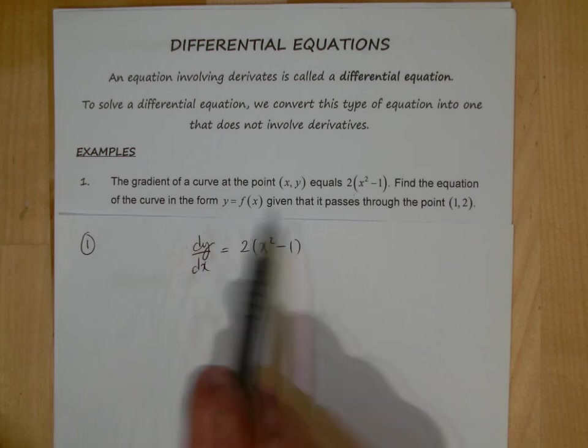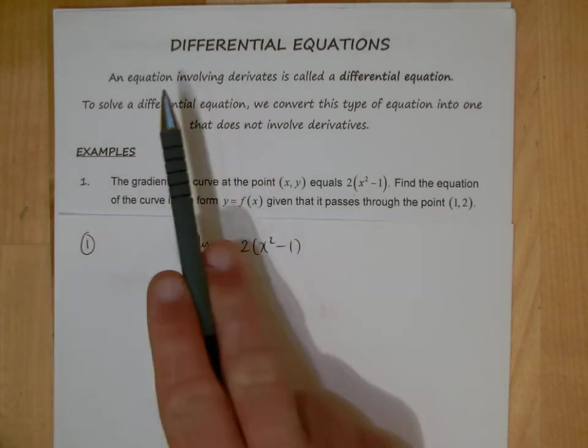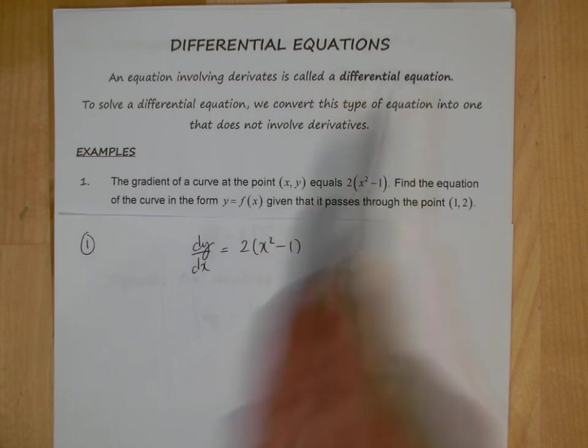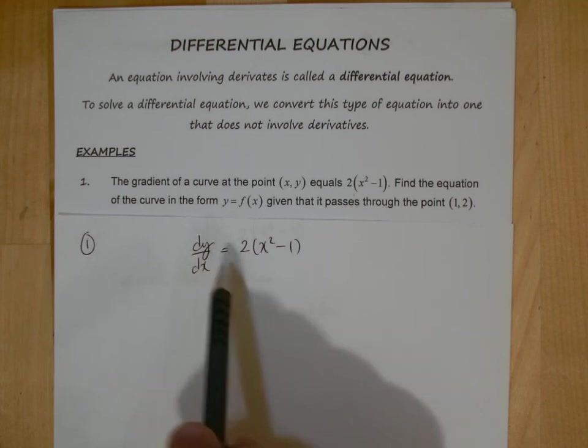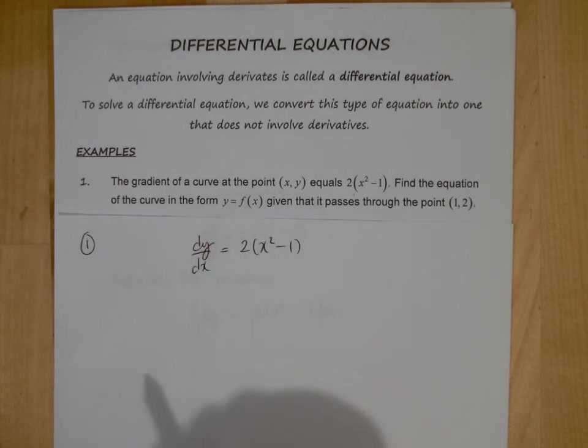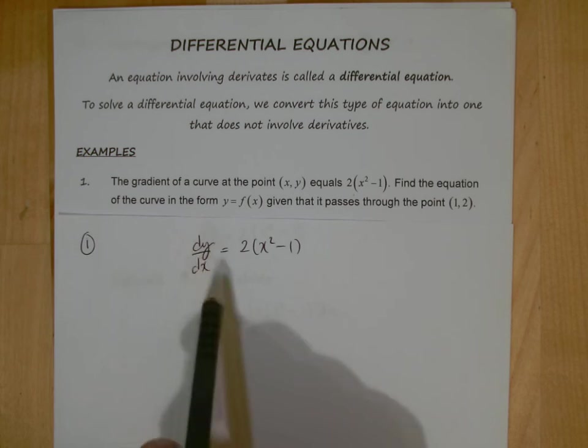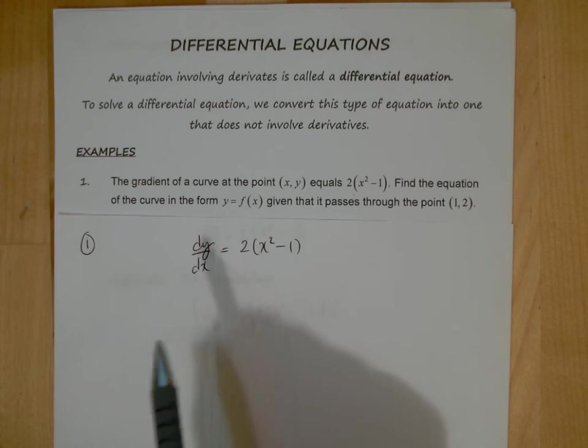And what they want us to do then is to find the equation of the curve in this form. Now when you look at this here, what we've actually got is a differential equation, because it meets that criteria at the top there. An equation involving derivatives is called a differential equation. We've got a derivative here, we've got dy/dx, and so this is a very simple type of differential equation.